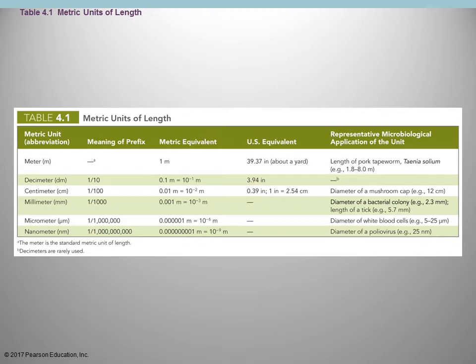The diameter of a white blood cell varies between 5 and 25 micrometers. A lot of bacteria are going to be very, very small. A nanometer is a thousand times smaller even than that — you're talking about the sizes of viruses. So extremely, extremely small.